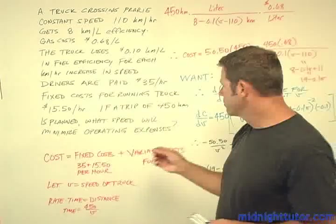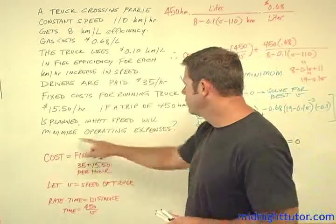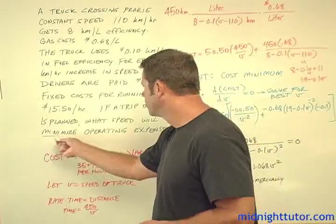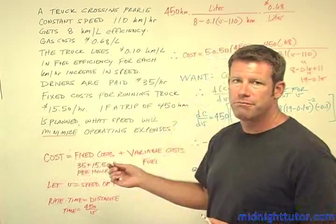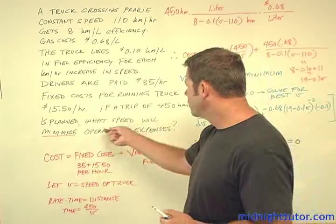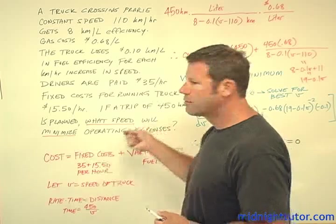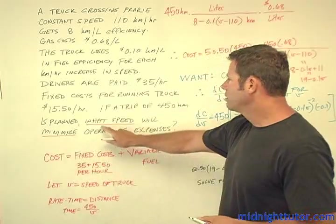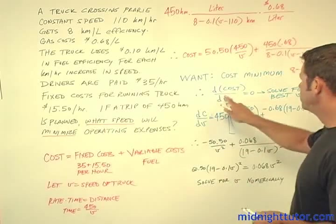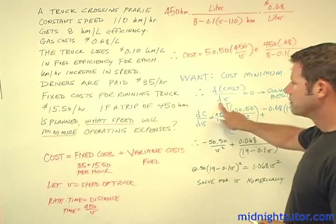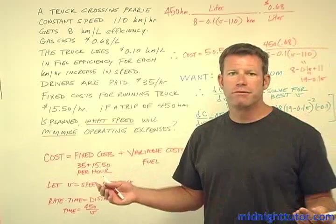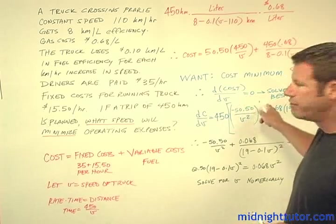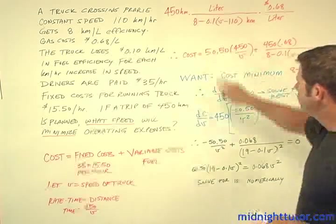Now, what do we want? We want the speed that minimizes operating expenses. The word 'minimize' is a clue that we're looking for a minimum. We want to find minimum cost as a function of speed — dC/dV. So we calculate dC/dV, set it equal to zero, and solve for V.